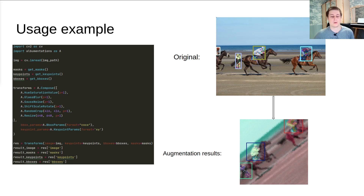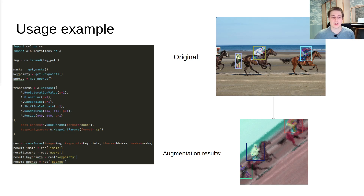If you need to work with bounding boxes or key points, you need to describe the formats of these targets. To apply transforms, we call our pipeline and provide all targets using named arguments — unnamed arguments are invalid. As a result, you get all targets with the same names as described in the pipeline call. You can also see the original image with bboxes and key points from the COCO dataset and the resulting image after the pipeline.